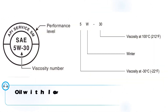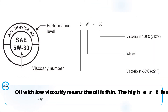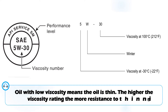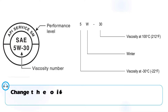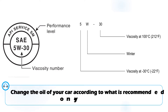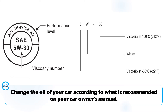An oil with low viscosity means that the oil is thin. Viscosity is the thickness of the oil — the higher the viscosity rating, the more resistance the oil will have when the engine operating temperature is high, which also means the oil has more resistance to thinning. Change the engine oil and ensure that the oil used has the right viscosity intended for your car engine. Usually the correct type of oil can be found in the car owner's manual.